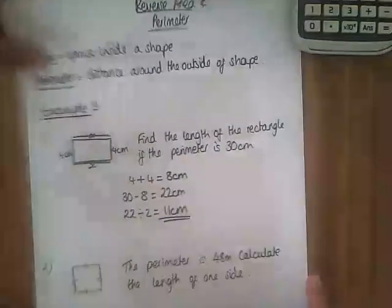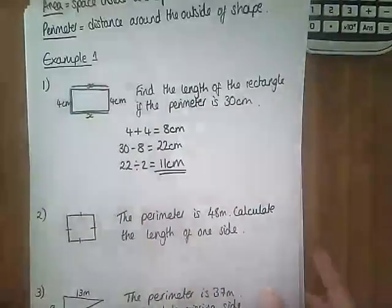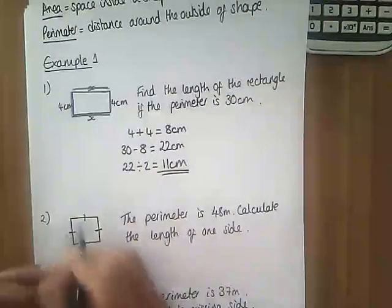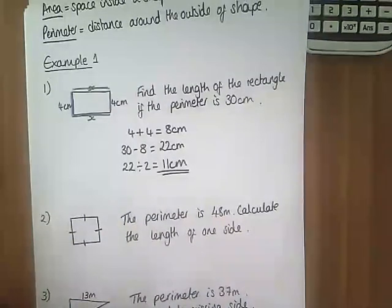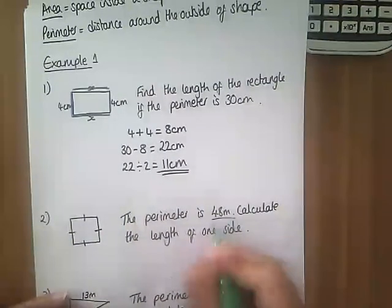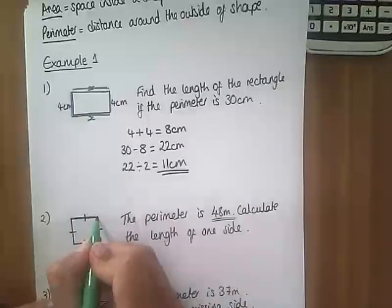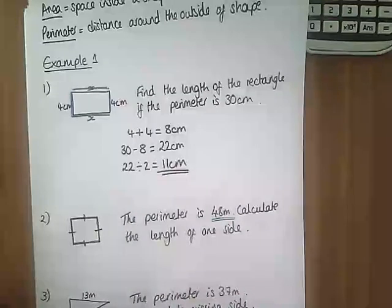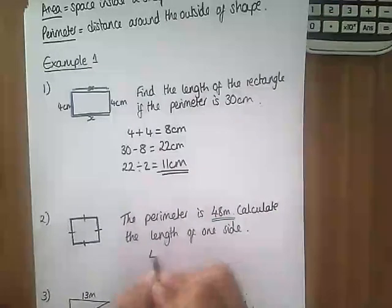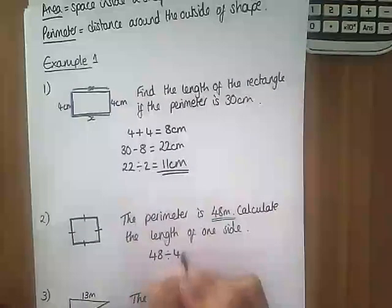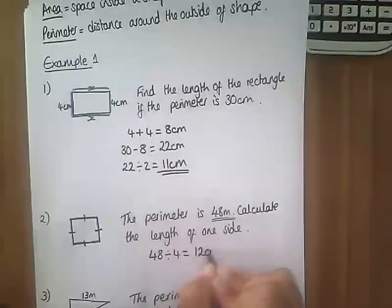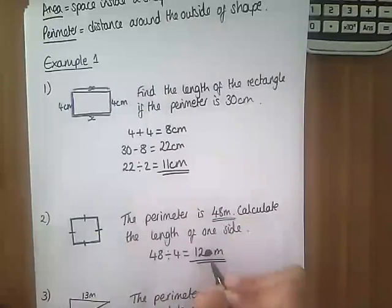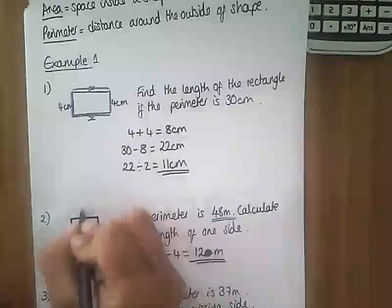Similarly, number two we've got a square. These lines on here mean that all of these sides are the same length. You've been told that the perimeter is 48 meters, so a combination of all these sides added together makes 48 meters. If they're all the same length, we divide by 4 because there's four sides, so we get each side is 12 meters.